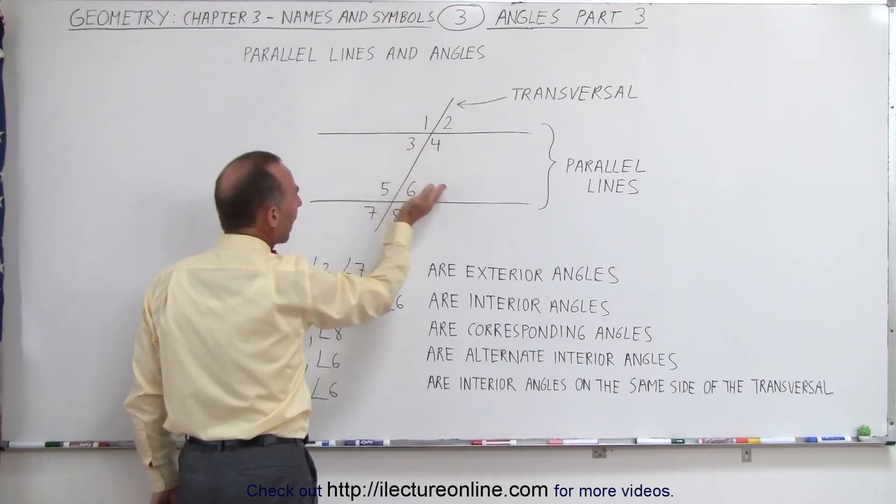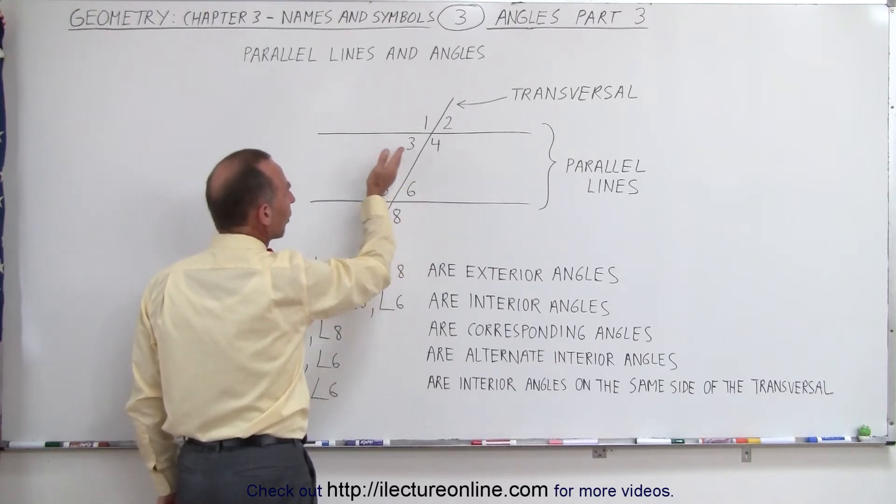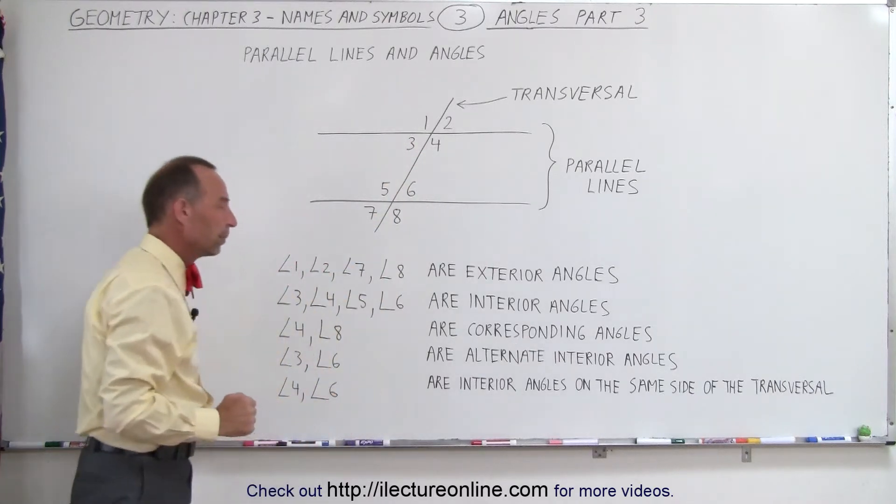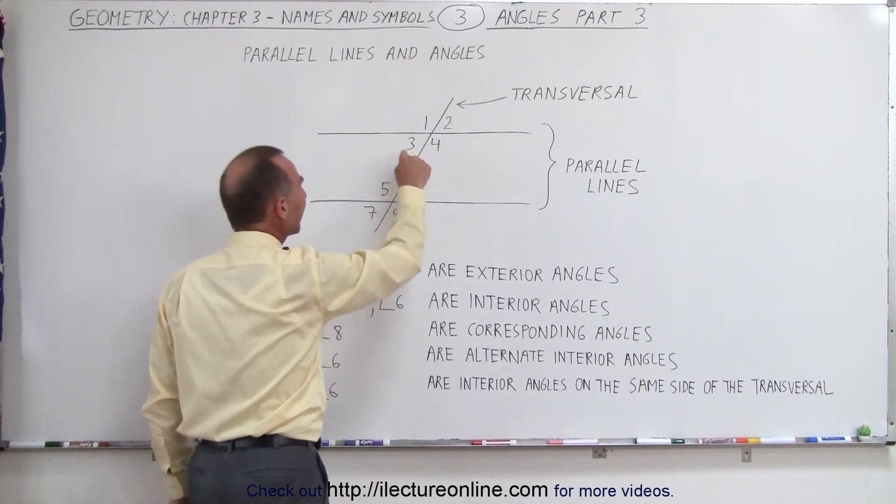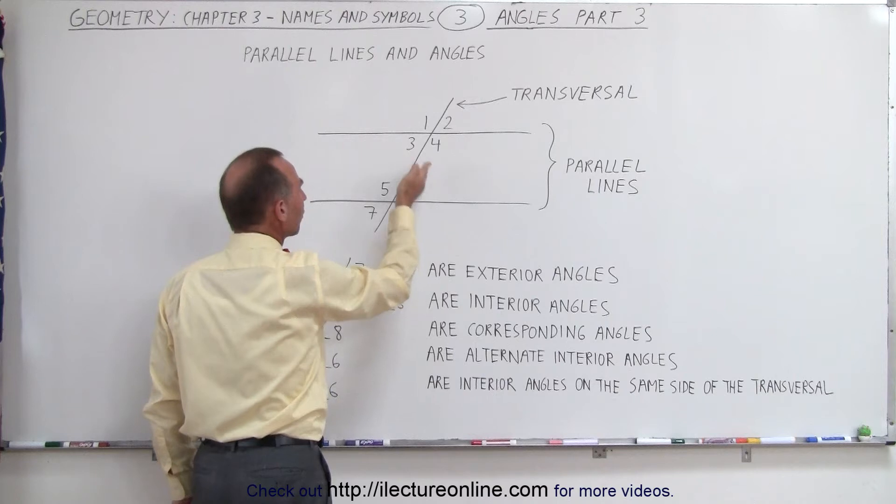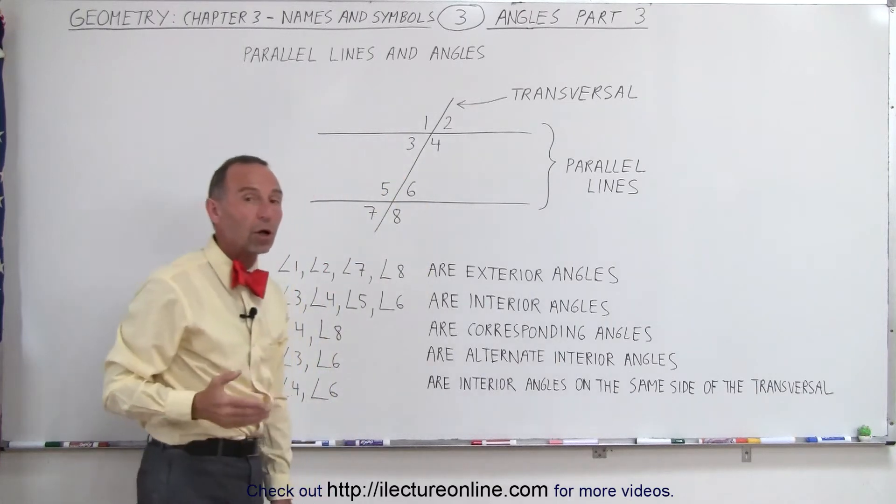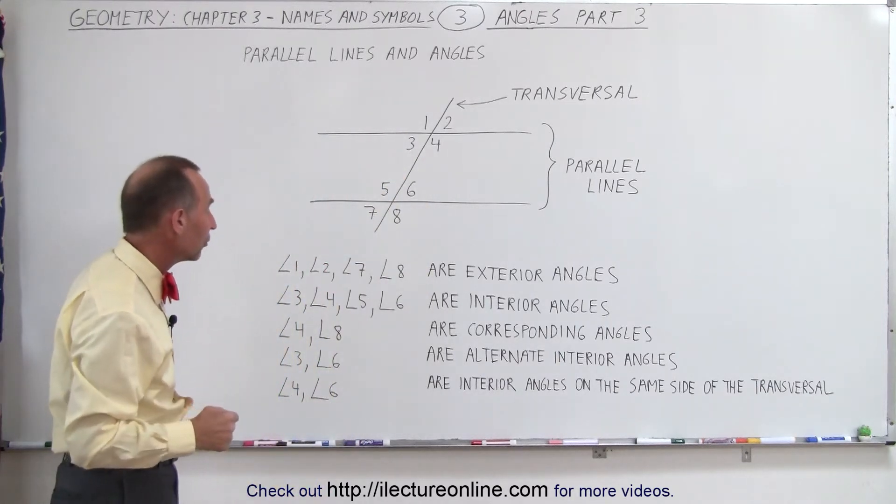They also are on the opposite side from one another, opposite on the transversal. So we have a special name for those. Those are called alternate interior angles. They're on alternate sides and they're interior angles, so we call them alternate interior angles.